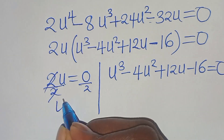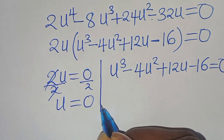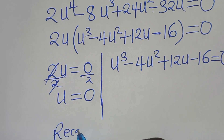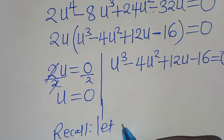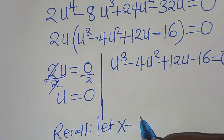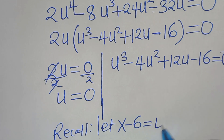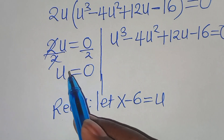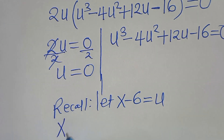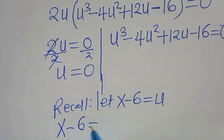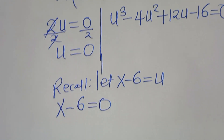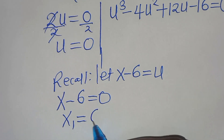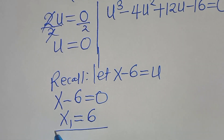From the first factor, if we set 2u equal to 0, then u is equal to 0. Since we let x minus 6 equal to u, substituting gives x minus 6 equal to 0, so x₁ is equal to 6. This is the first value of x.